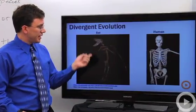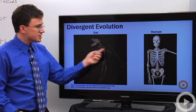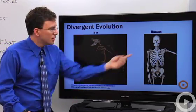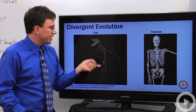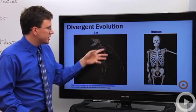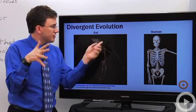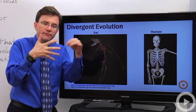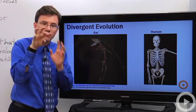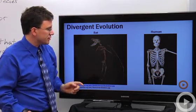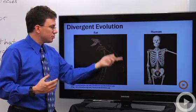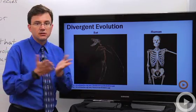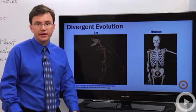If you take a look here at a bat skeleton, you can actually see some of the common features that we share with them. We've got a ribcage, they've got a ribcage, the number of bones in the arm are the same, and their wing is mainly just a grossly elongated version of our fingers, our phalanges bones. And so that is an example of a homologous structure demonstrating how we and bats illustrate divergent evolution.